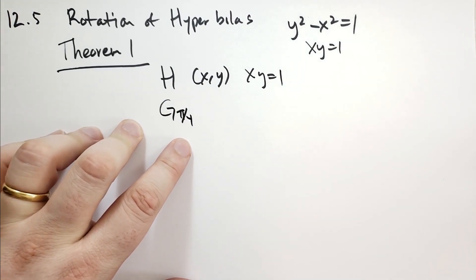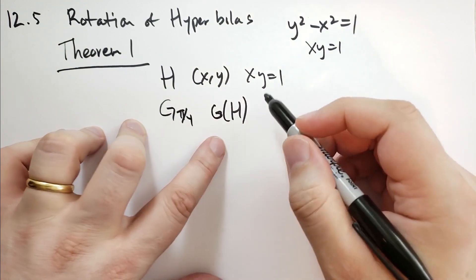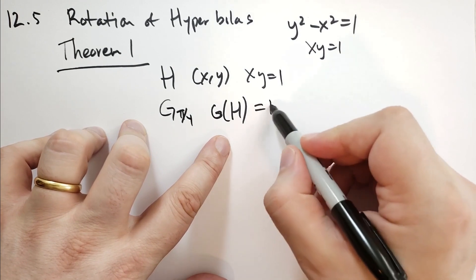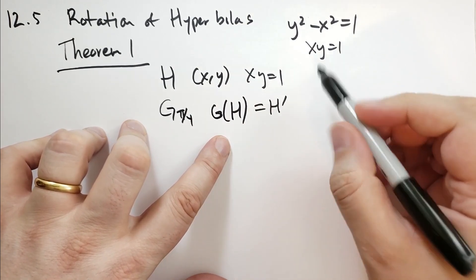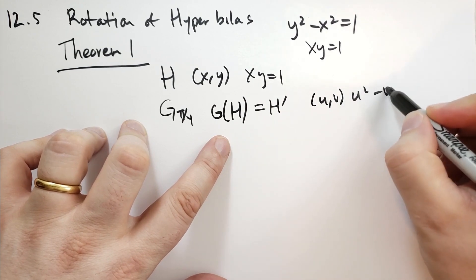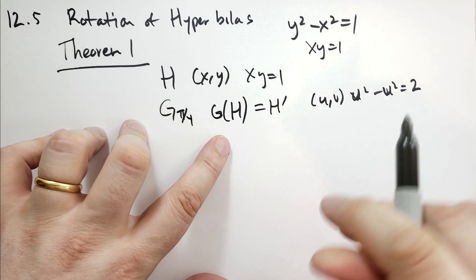Then the image of H under G, so H through G is going to be the curve H prime, which is the uv points satisfying v squared minus u squared is equal to 2.